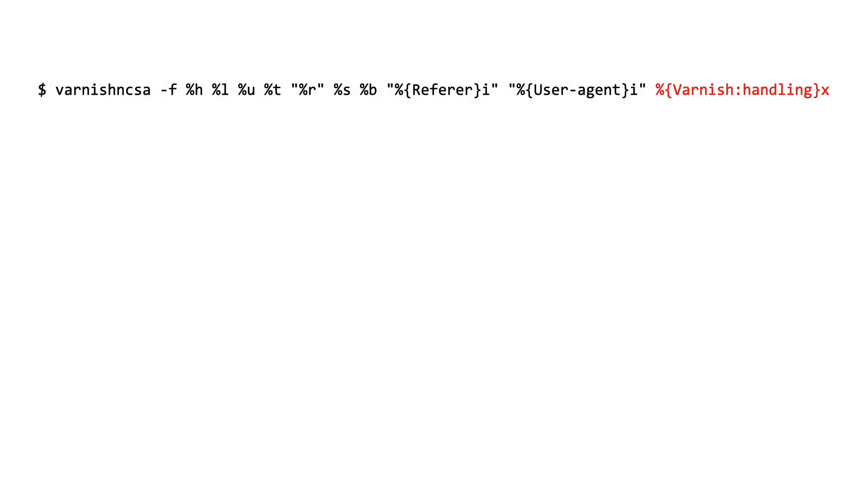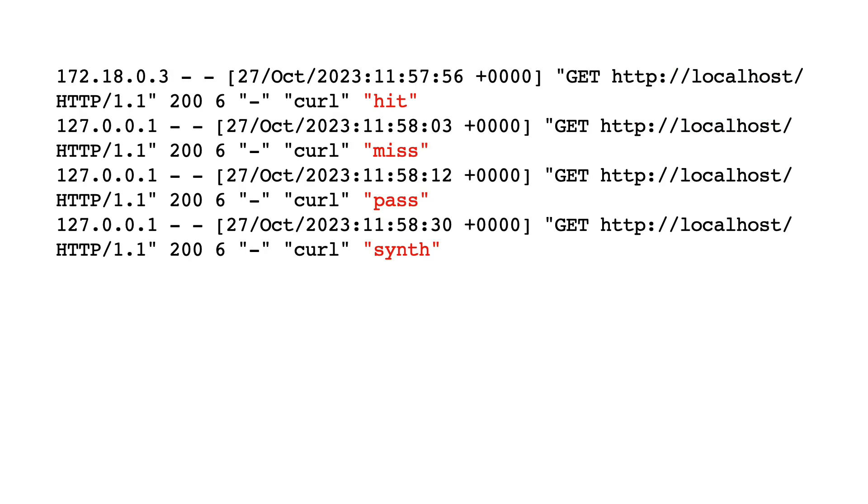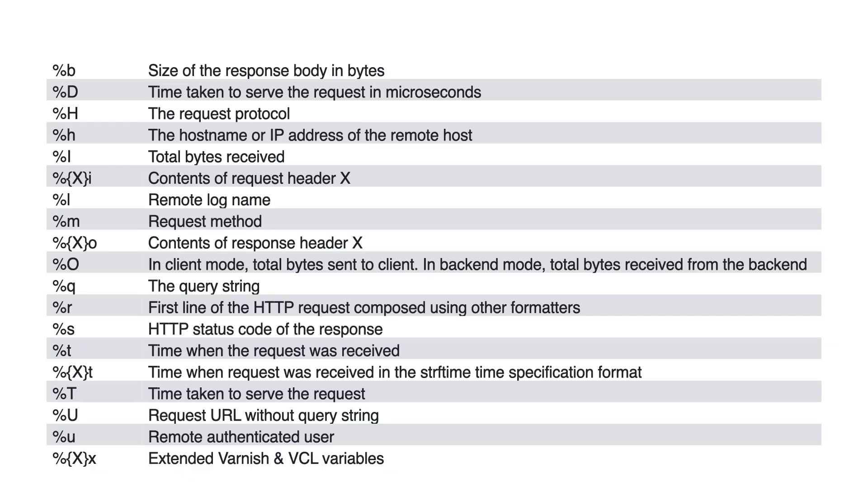There's a lot of different information you can get in these log lines representing individual requests. One of them is the 'handling' field, which tells you whether a request was a pass, Synth, hit, or miss. You can even use VCL to inject information into these lines. If you have a good relationship between the people writing VCL and the people configuring the logs — which you should — you can get enough information to understand a lot about how your cache is performing. Then you might spot certain passes that maybe shouldn't be passes.